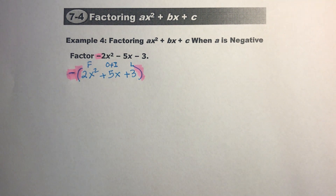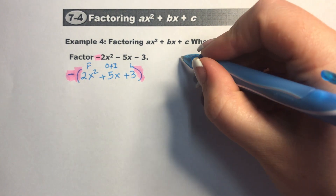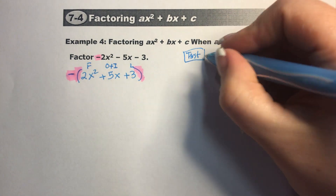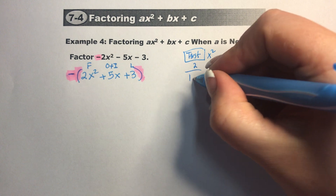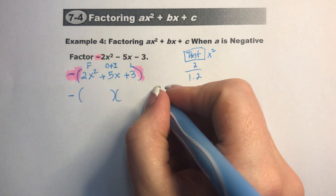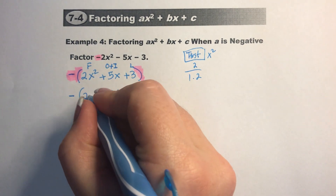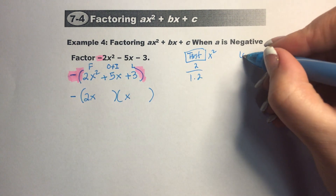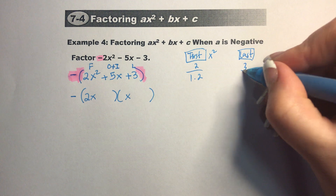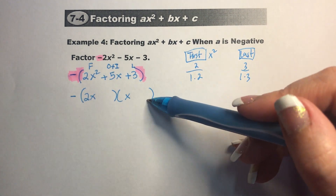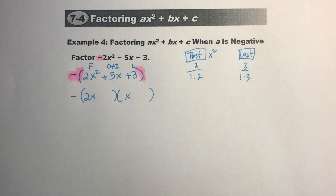So this is the first term, which is our x squared with coefficient 2 — there's only one combination. I can do my little voot voots and put 2x here and x here. Then I go to my last term, which is 3. There's only one combination: 1 and 3. So I can only put a 1 here and a 3 here, or a 3 here and a 1 there.